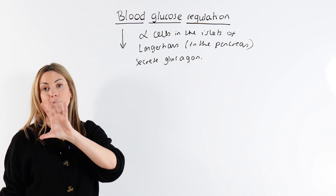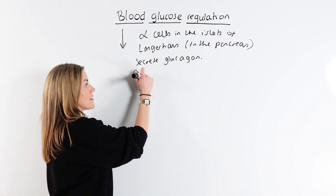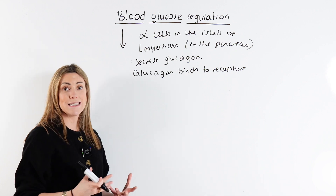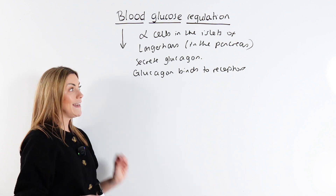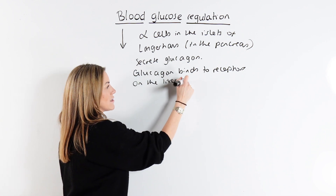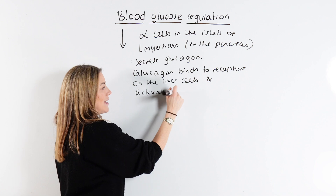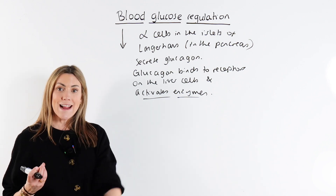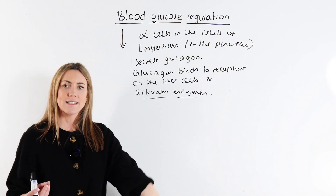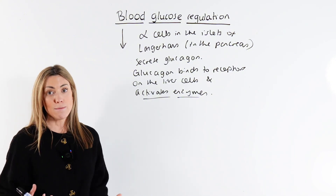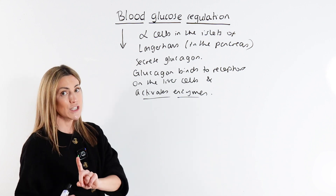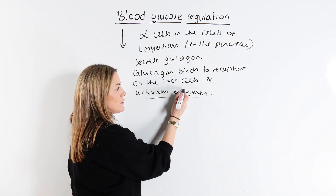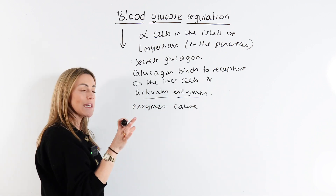Glucagon is another hormone made out of protein. It travels in the blood as a chemical messenger, but because it's made of protein, it can't diffuse into the cells itself, so it binds to receptors. Glucagon receptors for A-level biology are found on the liver cells. Glucagon binds to receptors on liver cells and activates enzymes — it's not going into the cell itself. Therefore, we need to tell the examiner that glucagon is not directly causing the following effects; it's activating enzymes within the cell, and it's those enzymes that cause the effects. This is an example of the second messenger model.